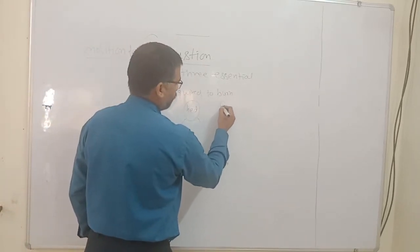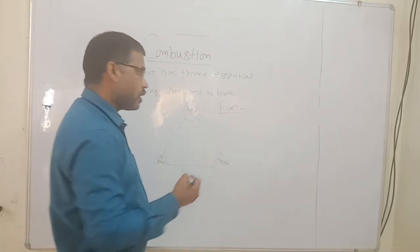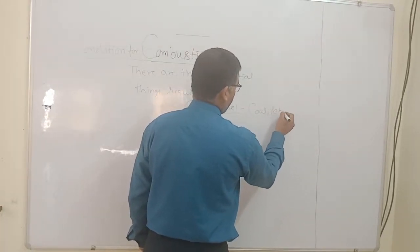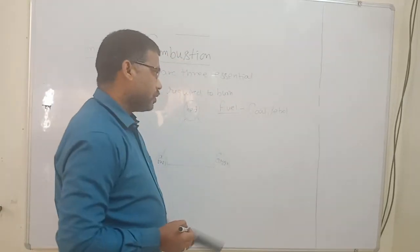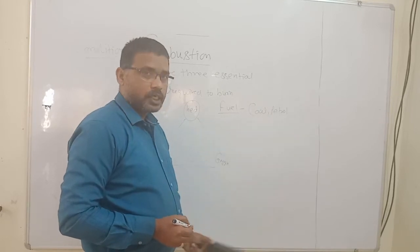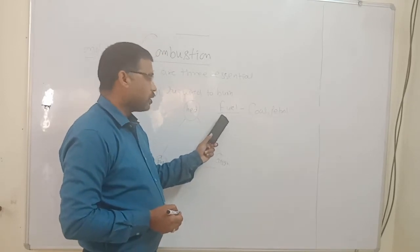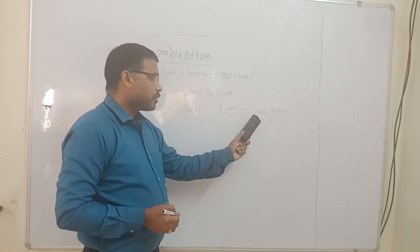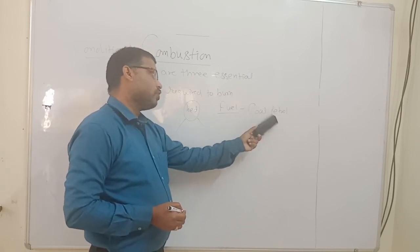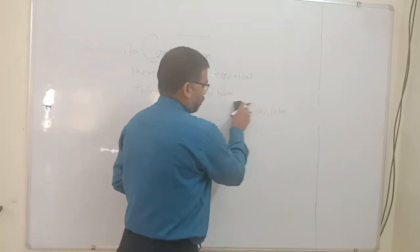As we know, fuel is a kind of substance which burns — like oil, petrol, and others. If fuel is not there, burning will not take place. So the essential requirement is the substance which we want to burn, and that should be present. If that substance is not there, combustion will not take place.